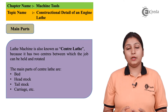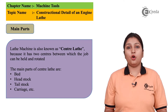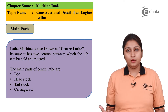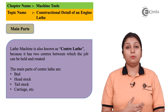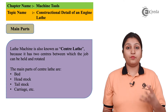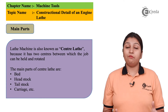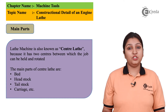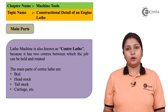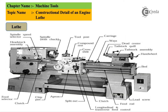A center lathe consists of a normal bed, and it also consists of a headstock and a tailstock which are mounted on the bed. It consists of a chuck, a feeding mechanism, and exact machining can be done on a lathe machine. In this diagram, you can see the constructional details of a lathe machine.